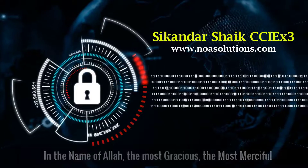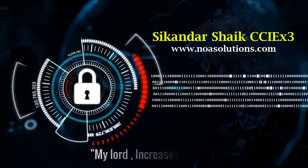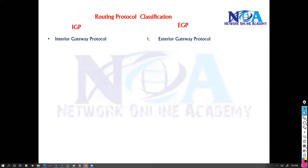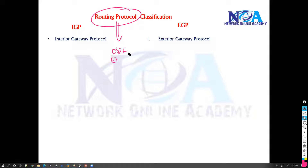Bismillahirrahmanirrahim. So if you try to see the difference between the IGP and the EGP protocols — we generally use dynamic routing protocols, like we did with OSPF and EIGRP. Basically, with the help of these dynamic routing protocols, we can exchange the routes.